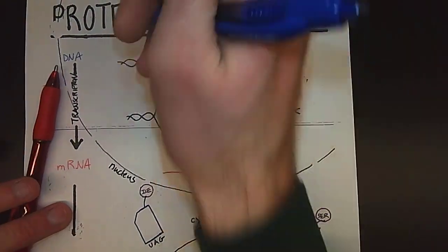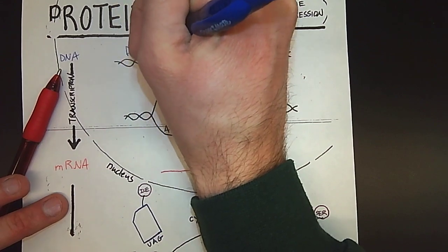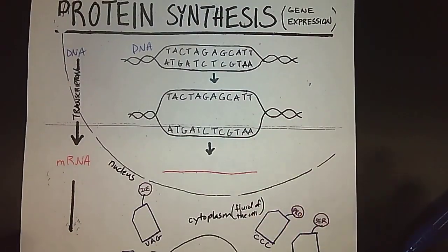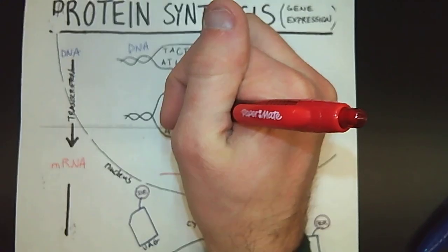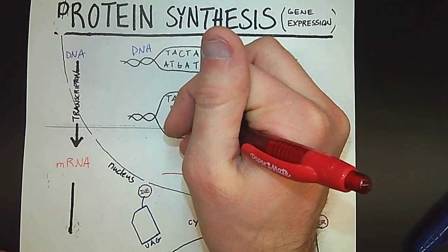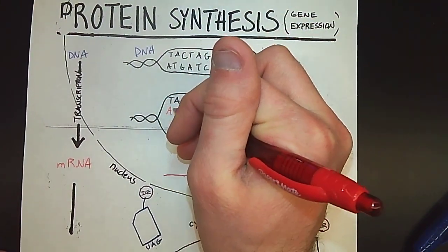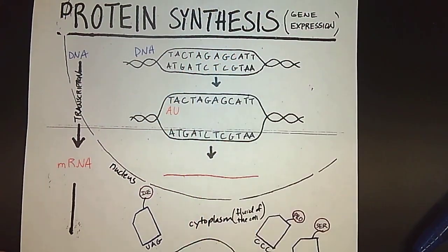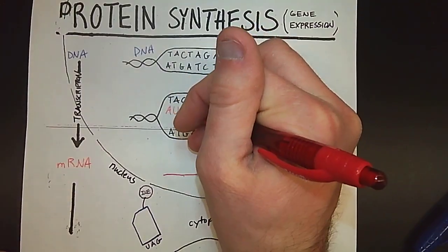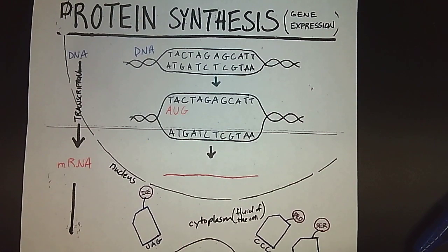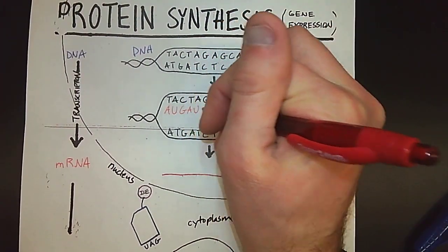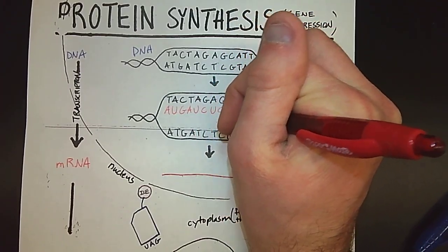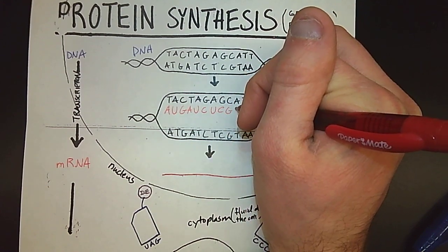So I'm going to label my DNA right here. Notice I'm kind of making DNA blue. I'm going to make RNA red. And so the RNA nucleotides are going to start attaching here. So an A with a T, a U with an A, a G with a C. Remember U because it's RNA. And then I could just continue to fill out this DNA template.